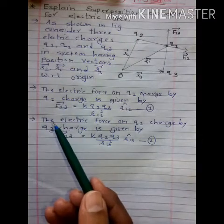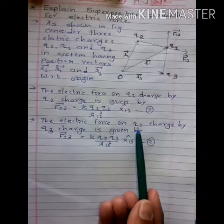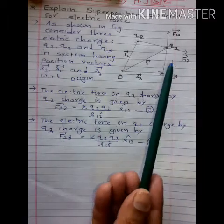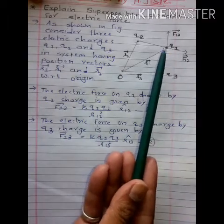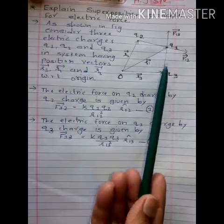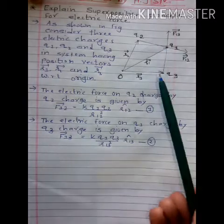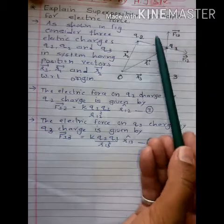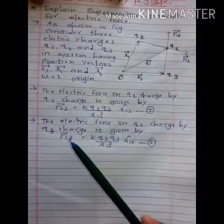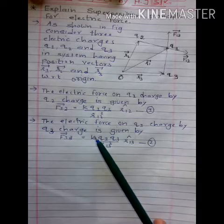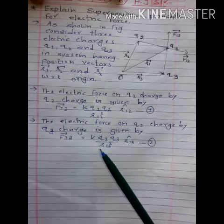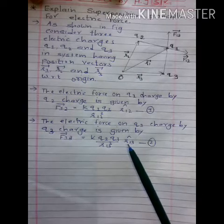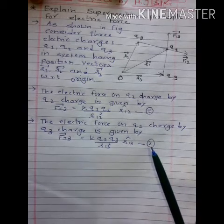Next situation: the electric force on Q1 charge by Q3 charge. Here we consider force on Q1 by Q3, so the direction of force is from Q3 to Q1. Vector F13 is equal to K Q1 Q3 upon R13 squared, multiplied by R13 cap. This is equation number 2.